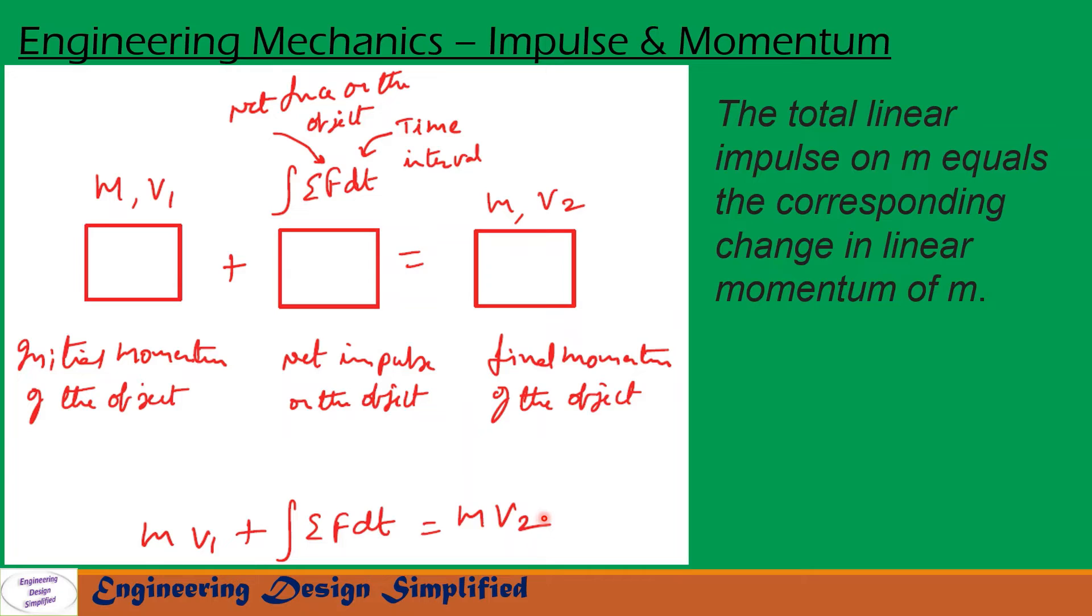So from the impulse-momentum principle, the total linear impulse on this object will equal the net change in its momentum. That is, ∫ΣF dt = m(v₂ - v₁).